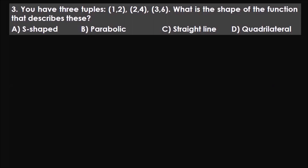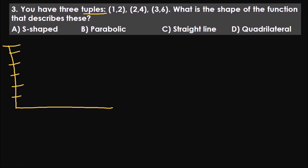First, what are tuples? Tuples are nothing but x and y coordinates. Let's solve with the graph method. We have the y-axis and x-axis. The first point, one comma two, is here. Two comma four is here. Three comma six is here. Obviously, this is a straight line.